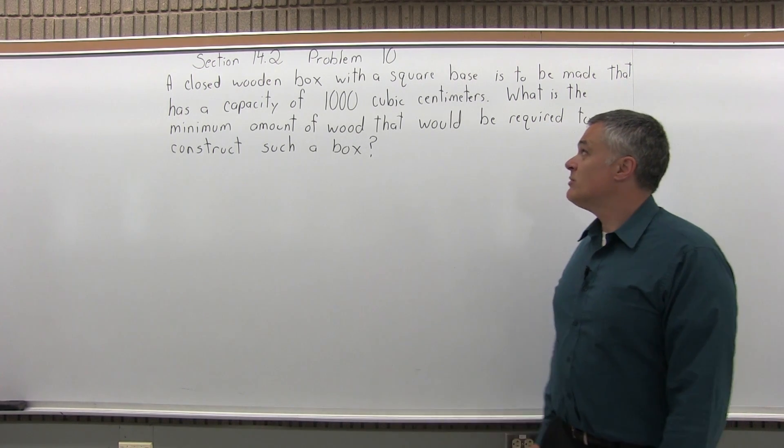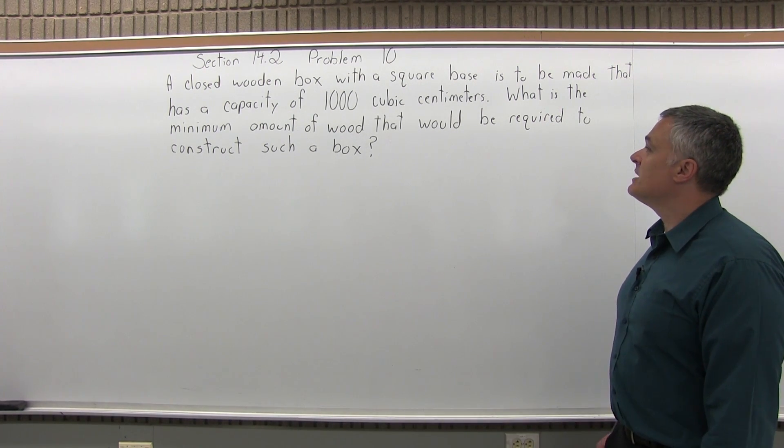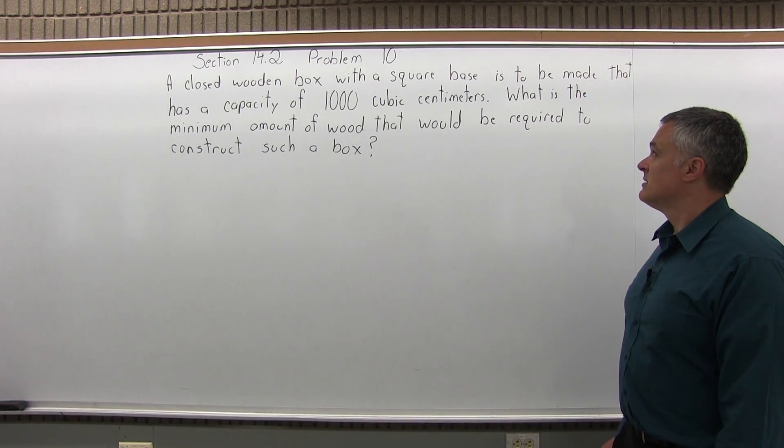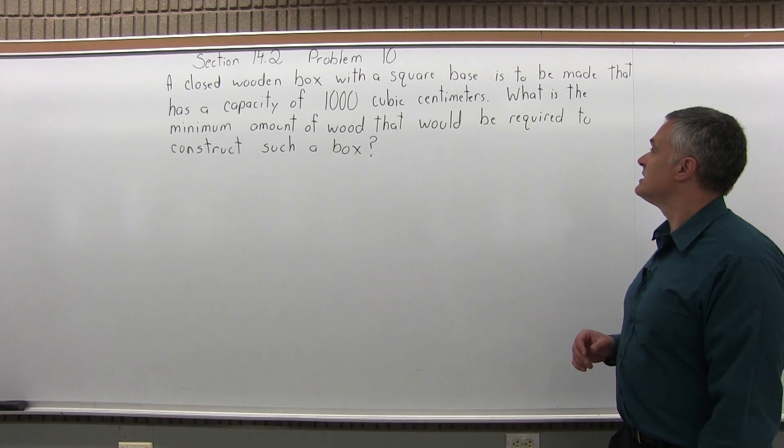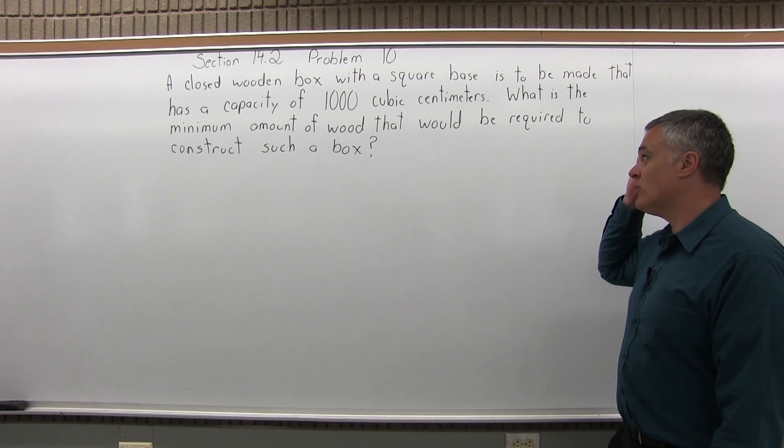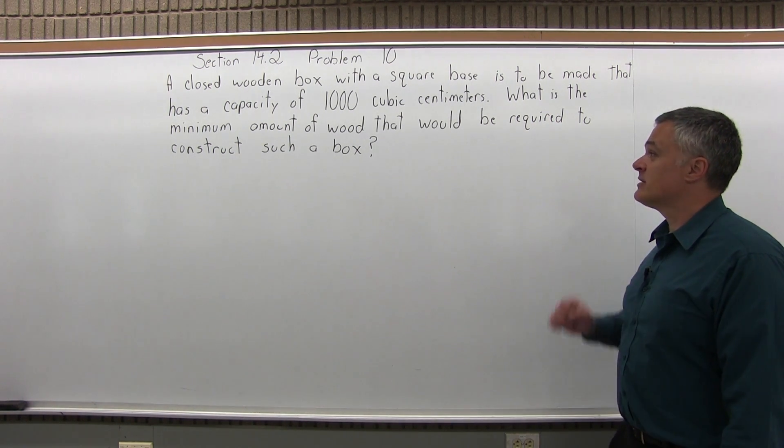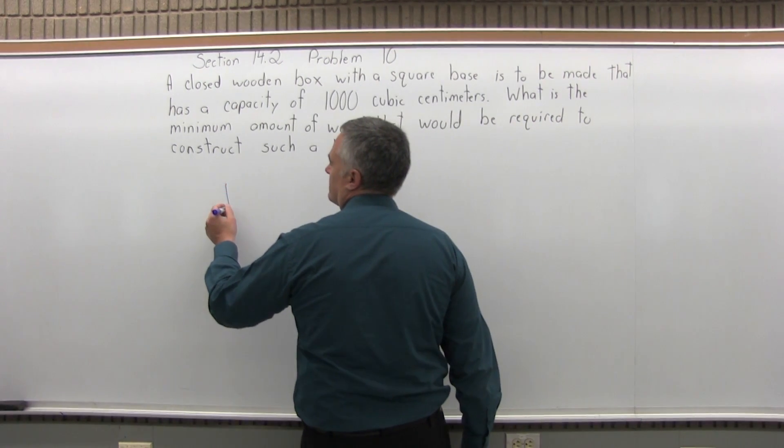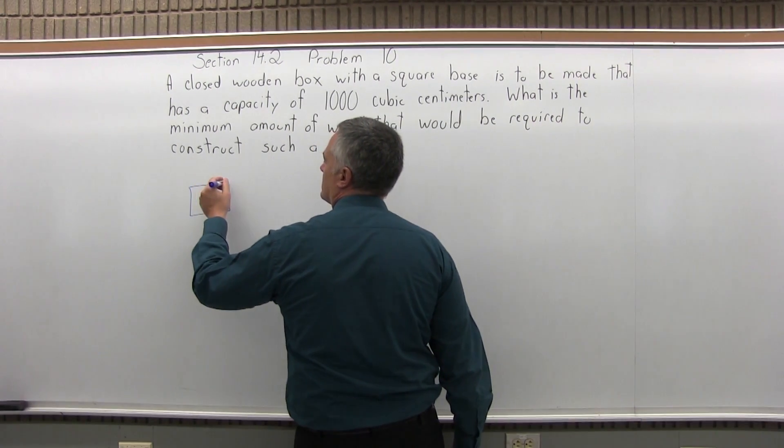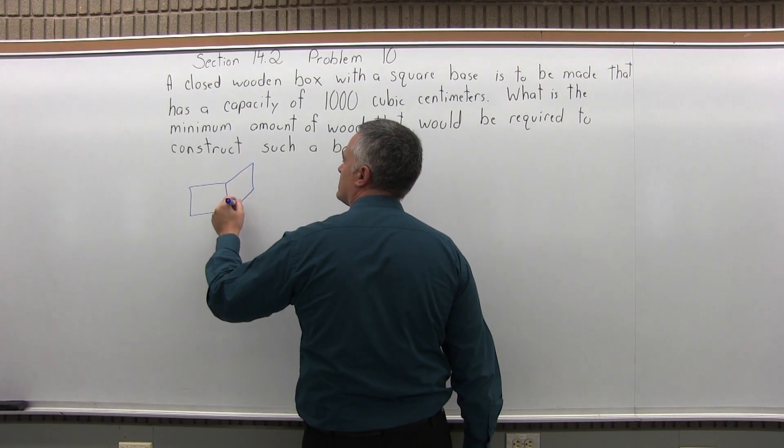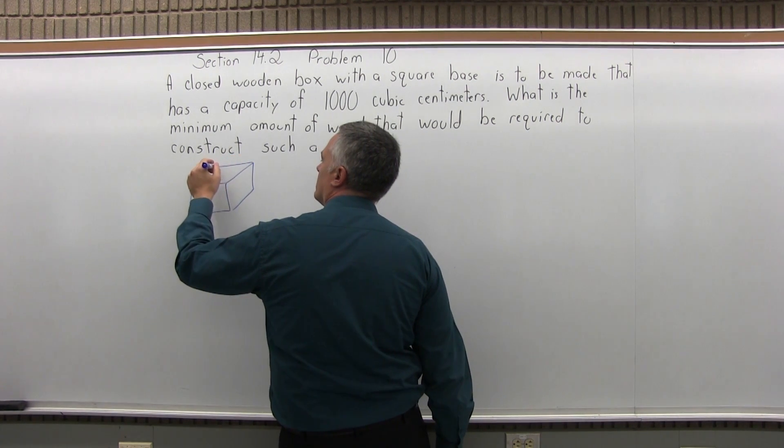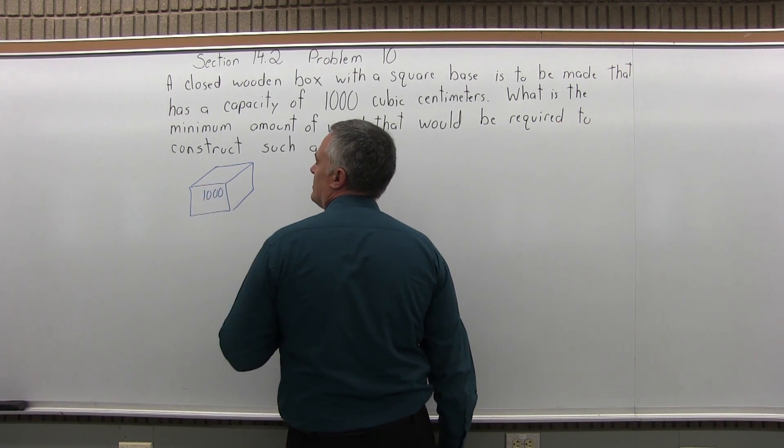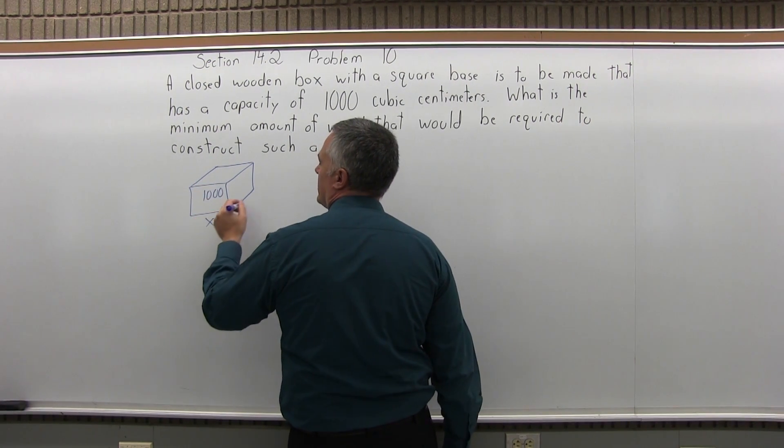It says a closed wooden box with a square base is to be made that has a capacity of 1,000 cubic centimeters. That's actually not that big of a box. It says what is the minimum amount of wood that would be required to construct such a box?